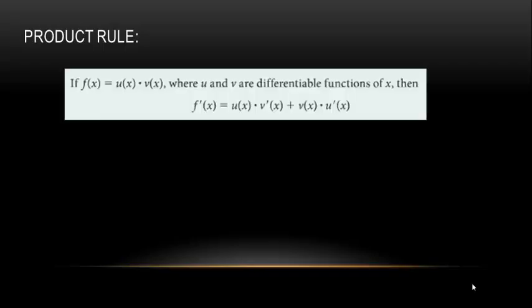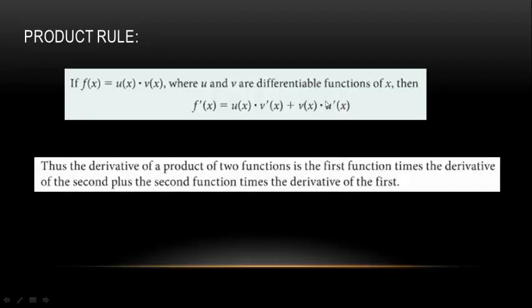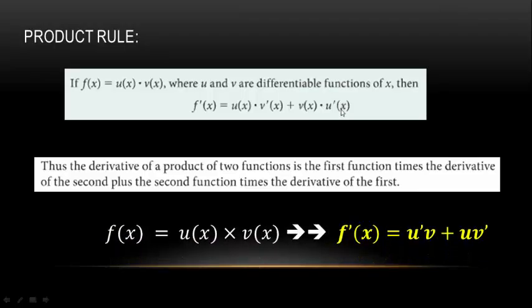The product rule applies when we have a function f(x) that can be written as a product of two other functions. If f(x) can be written as the product of two differentiable functions u and v of x, then the derivative of f(x) is equal to u times the derivative of v, plus v times the derivative of u — that is, u·v' + v·u'. The derivative of the first function times the second, plus the second function times the derivative of the first.